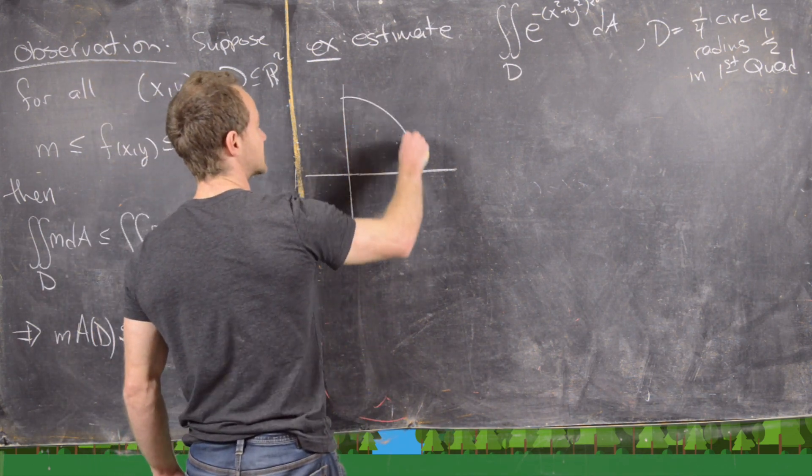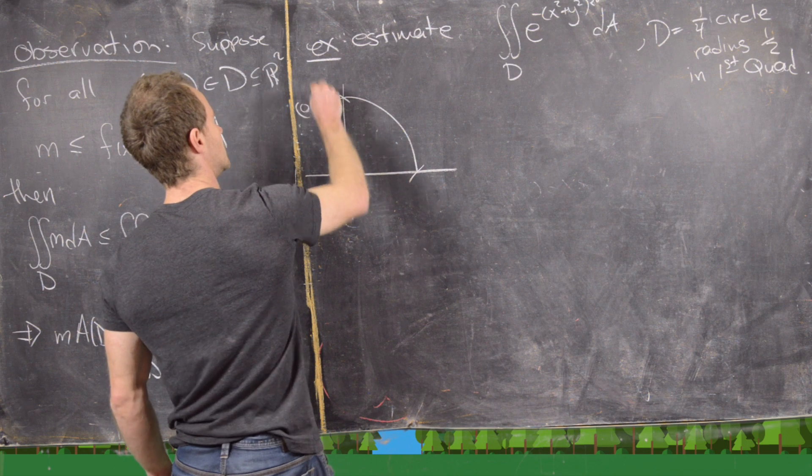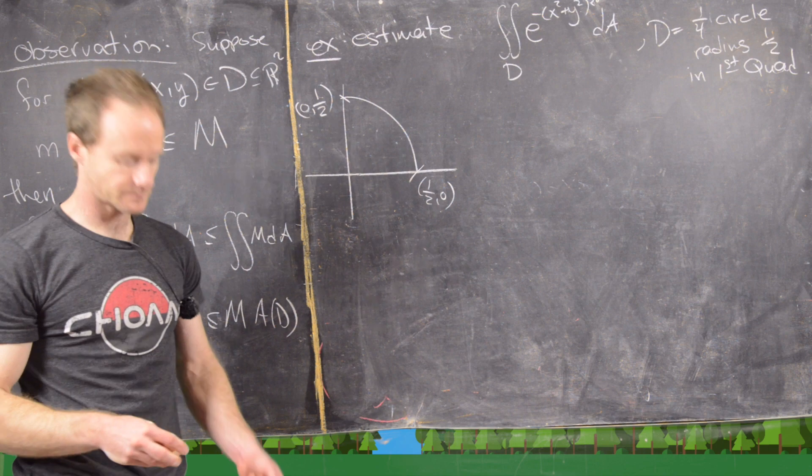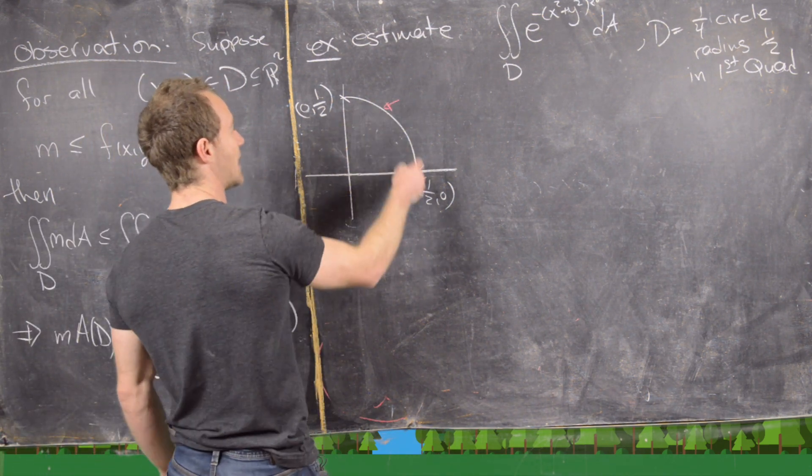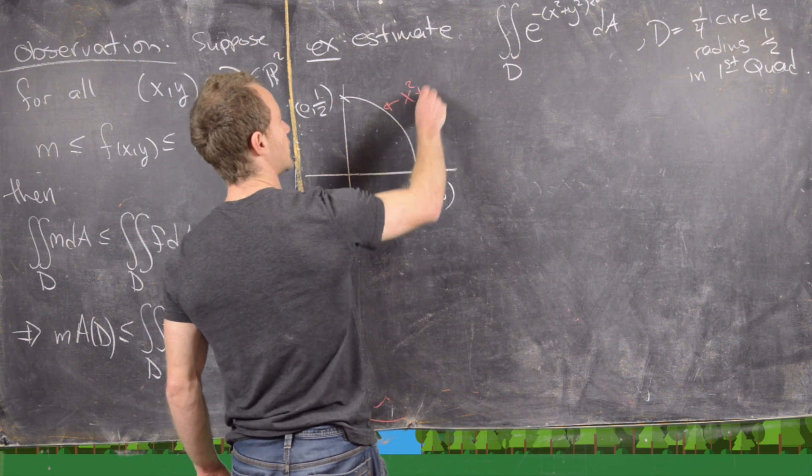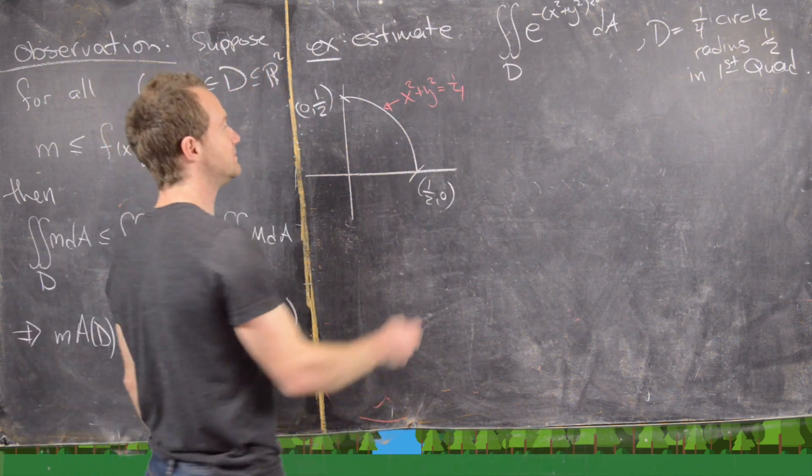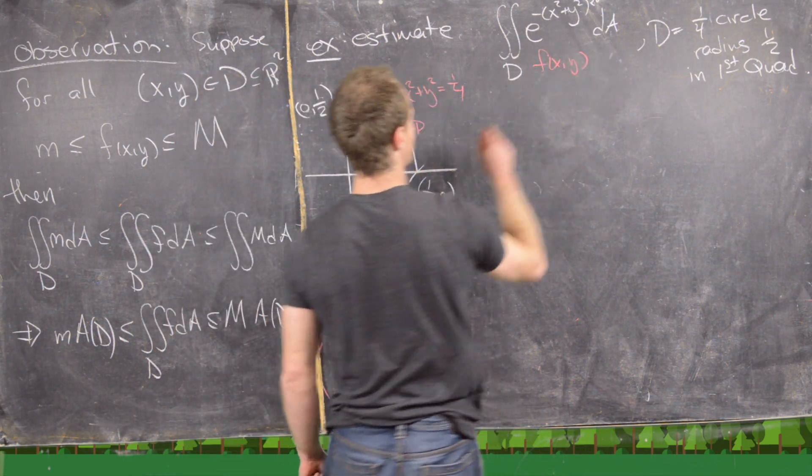So that looks something like this. So we have one-half here, and then we have one-half, zero here. Great. And now notice on this boundary, we know that x²+y² equals one-quarter, which means our function, if we call this the function f(x,y),